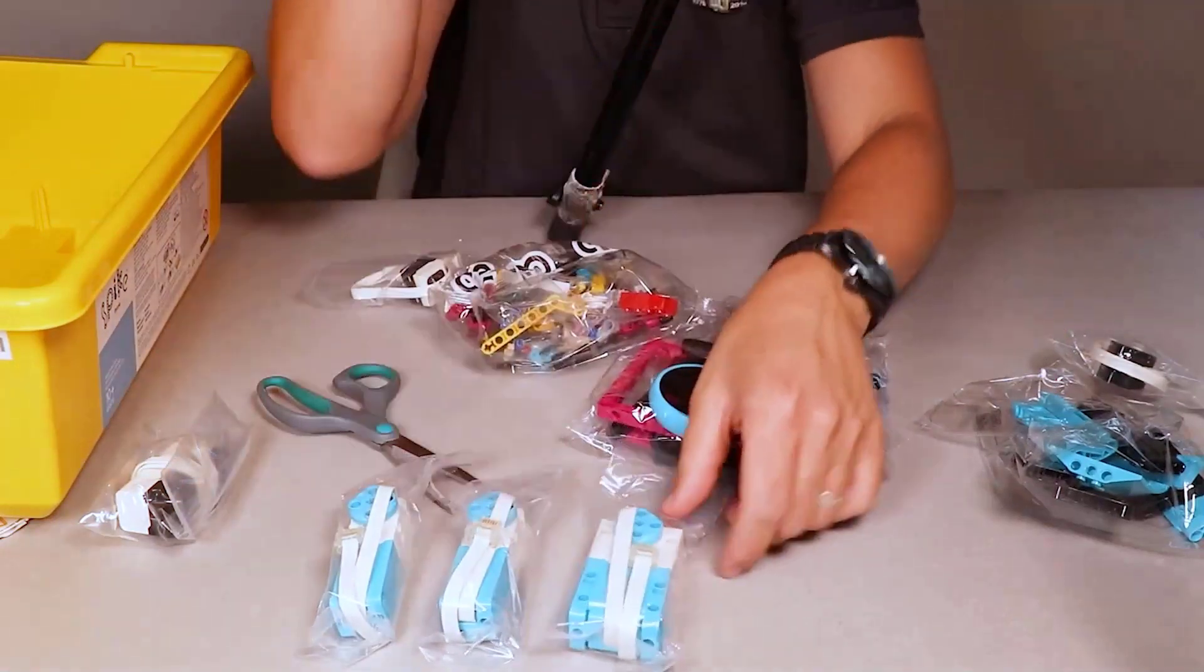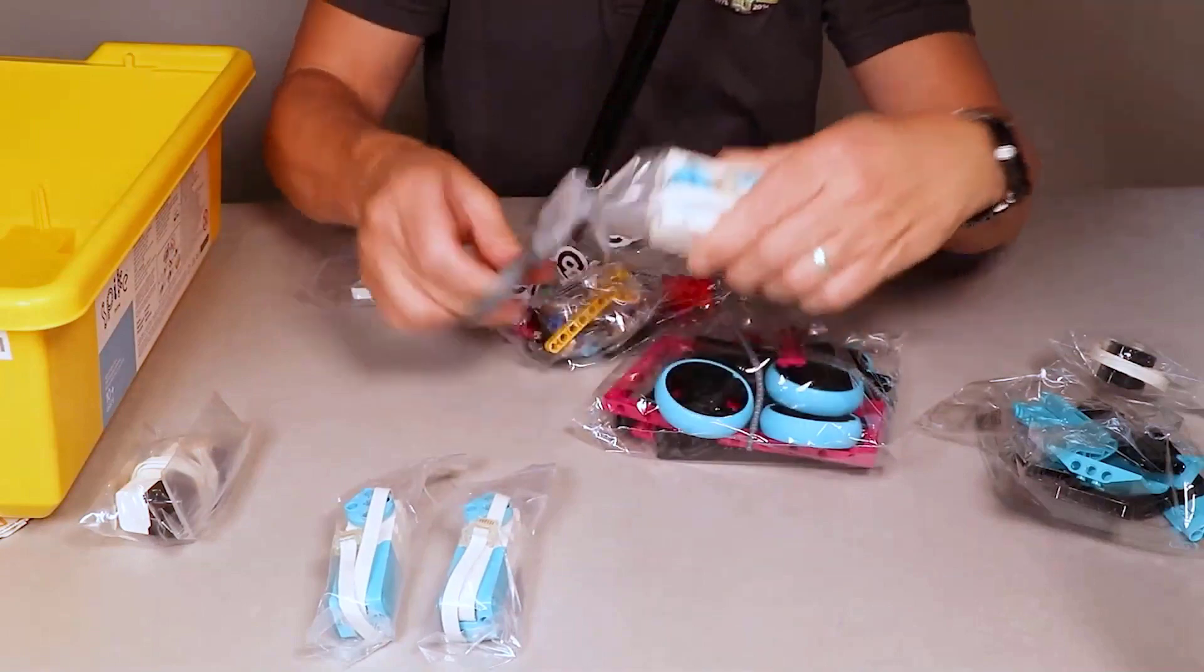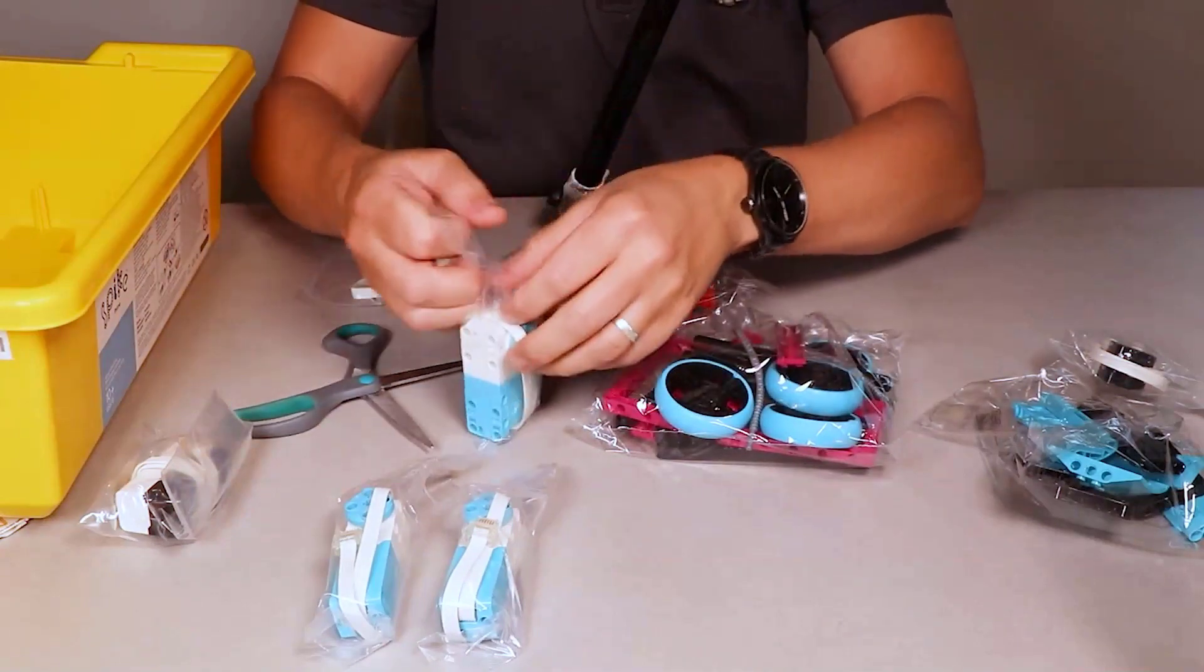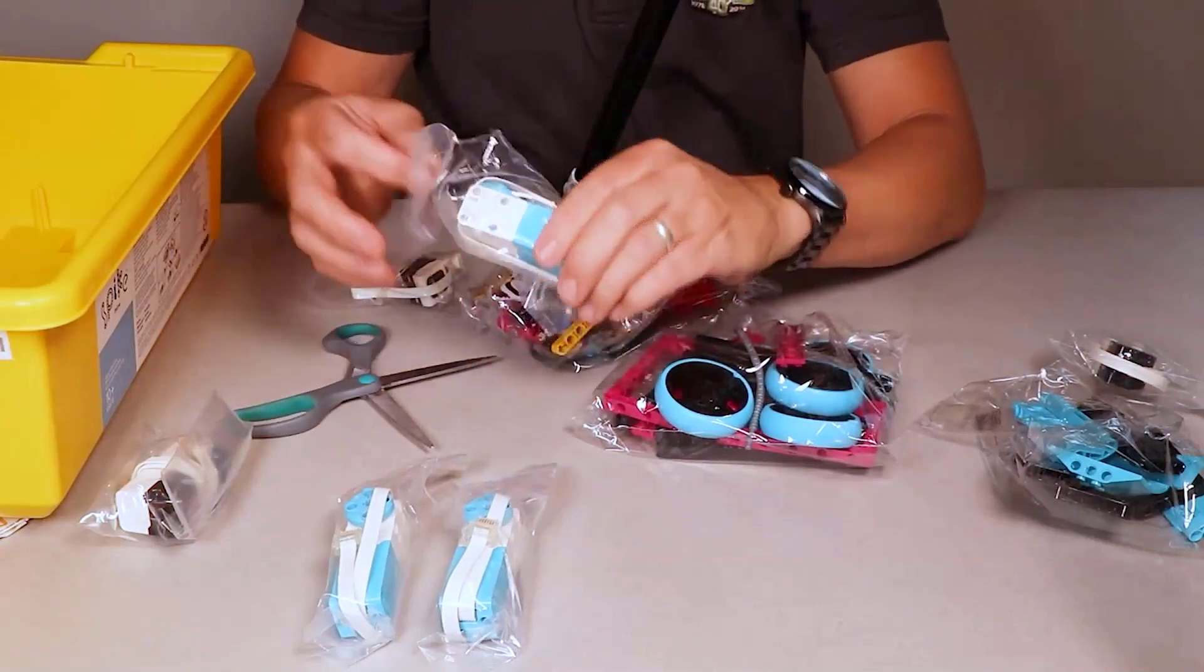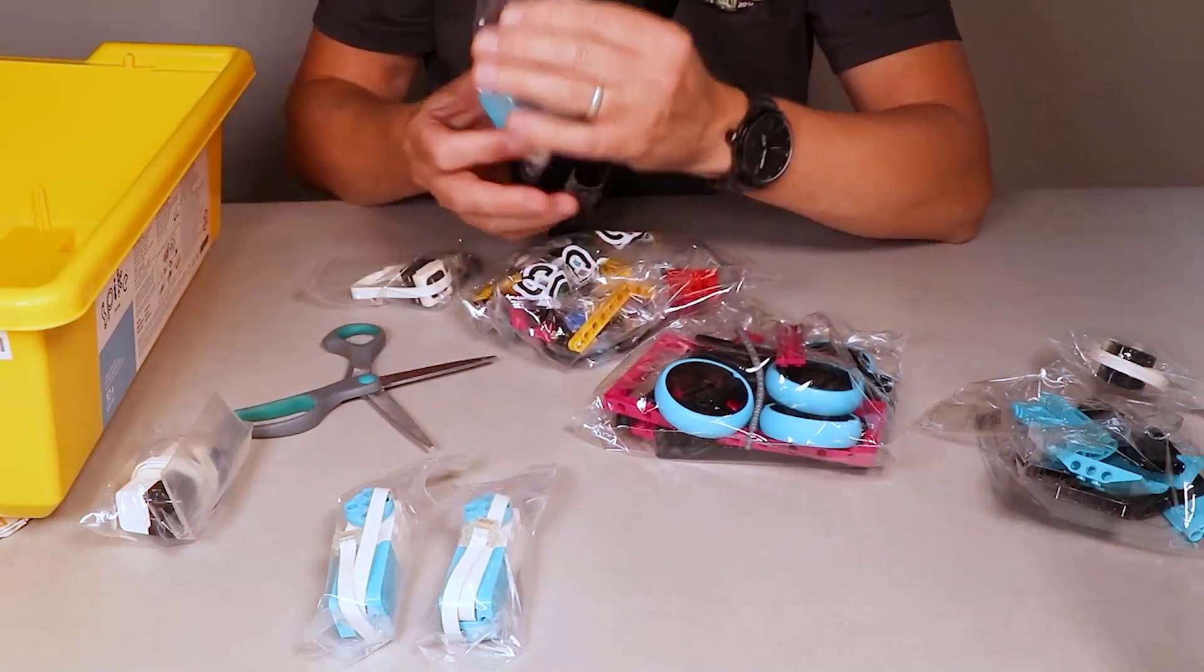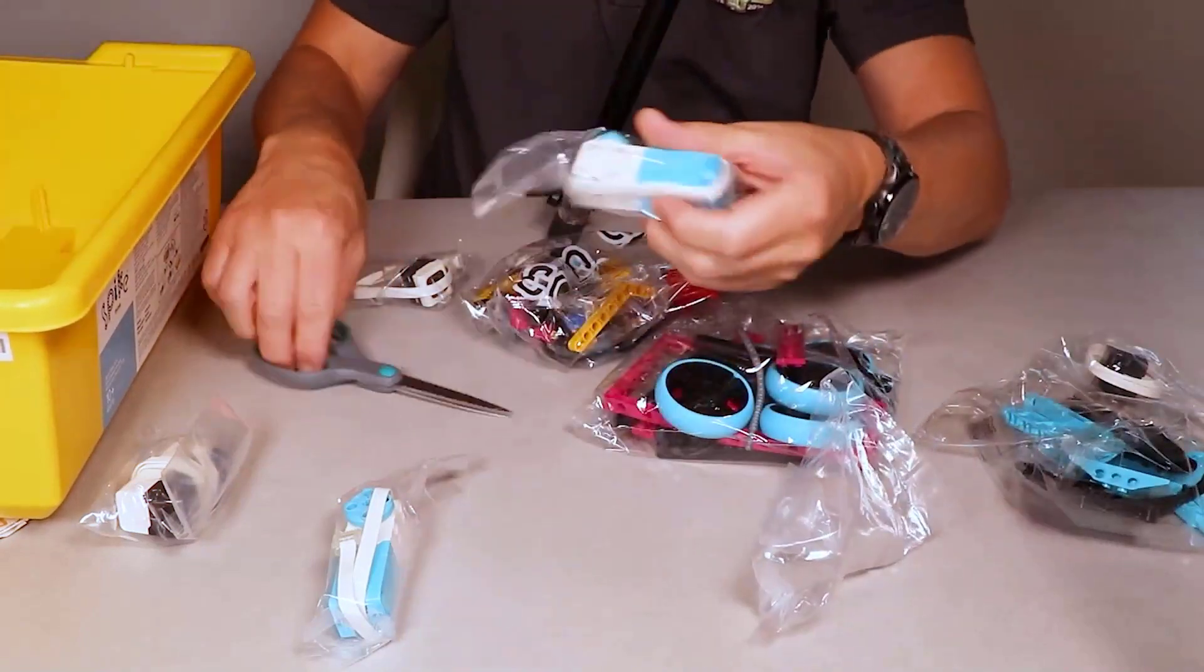Now we have a few big components coming up. These are our motors. You'll end up with one large motor and two small motors. You can open each of these up and then just drop them down into the yellow box.